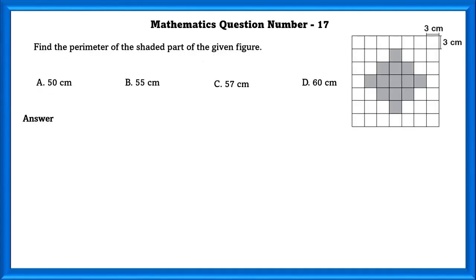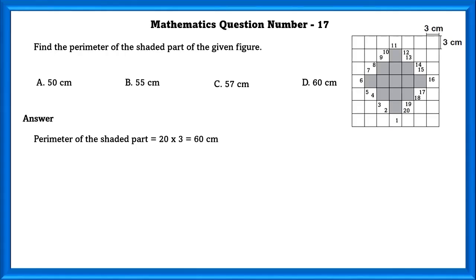Mathematics question number 17. Find the perimeter of the shaded part of the given figure. As we can see in the figure, there are 20 sides and each side equals 3 centimetres, so the perimeter of the shaded part equals 20 × 3, which equals 60 centimetres.